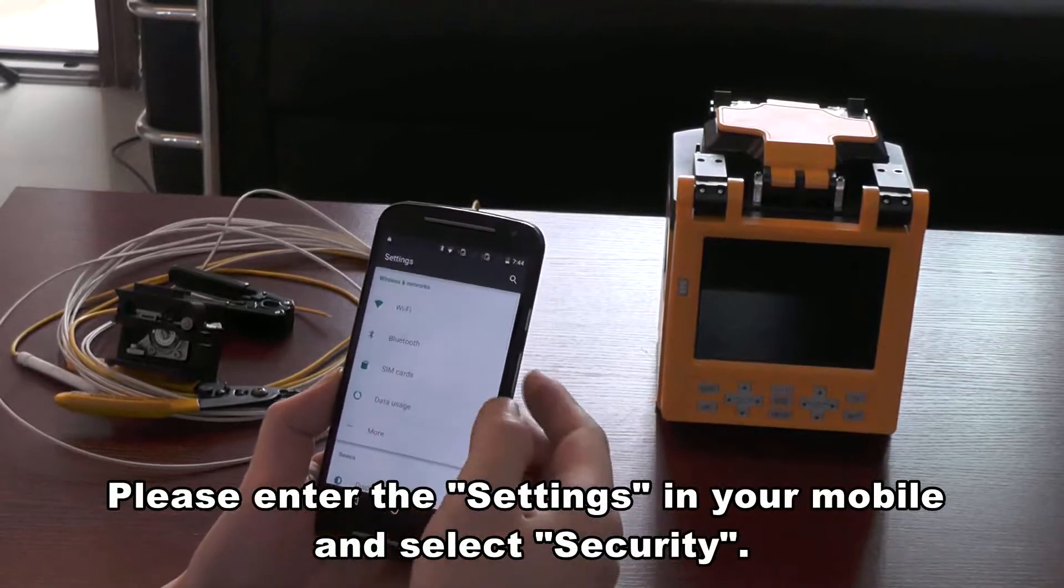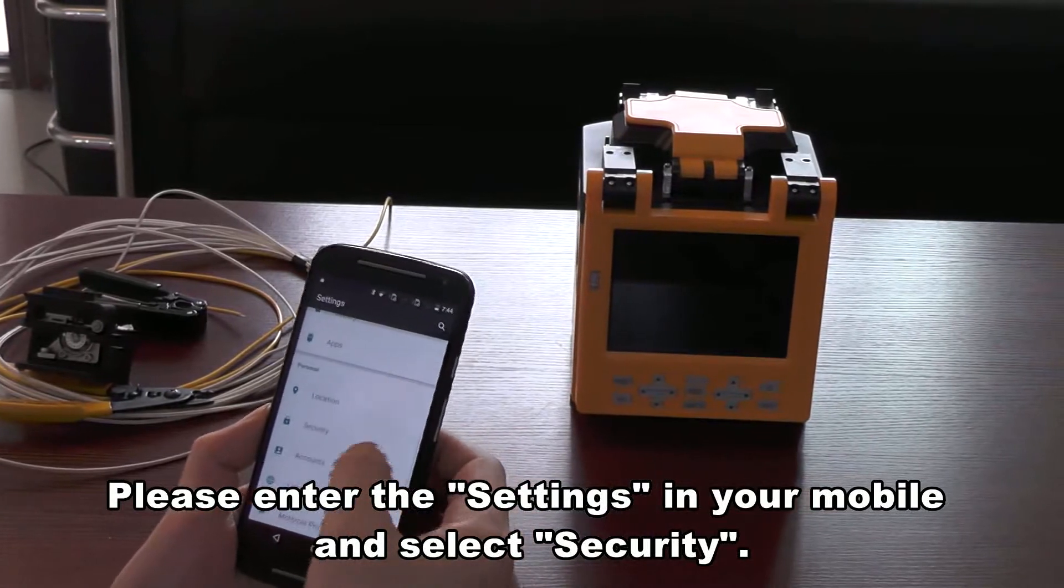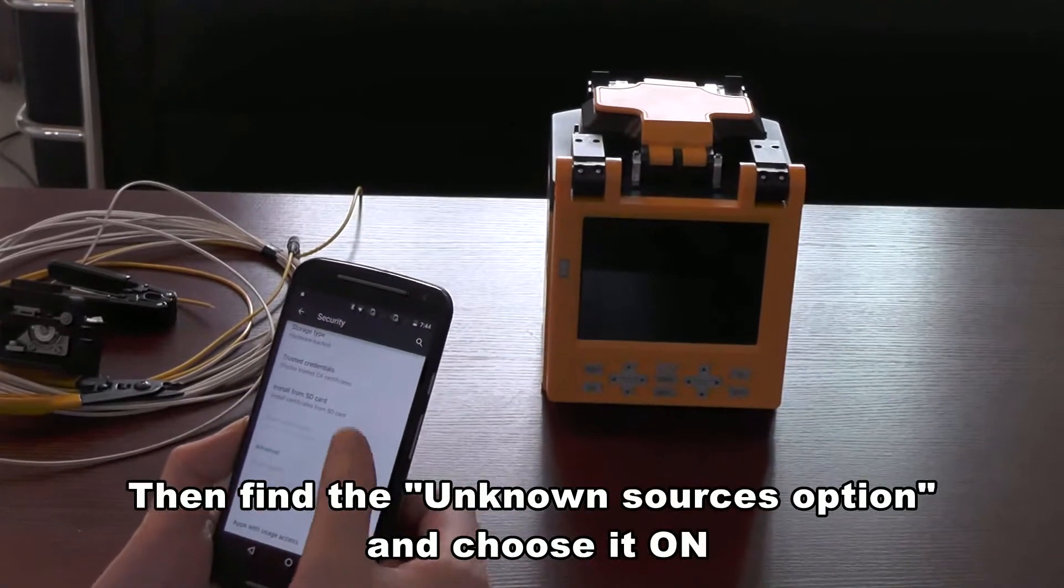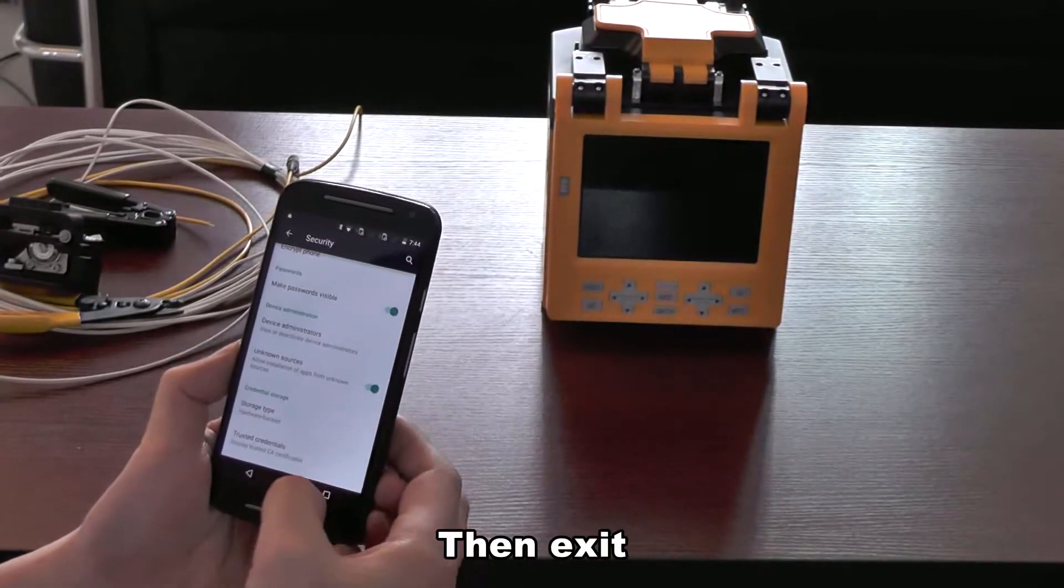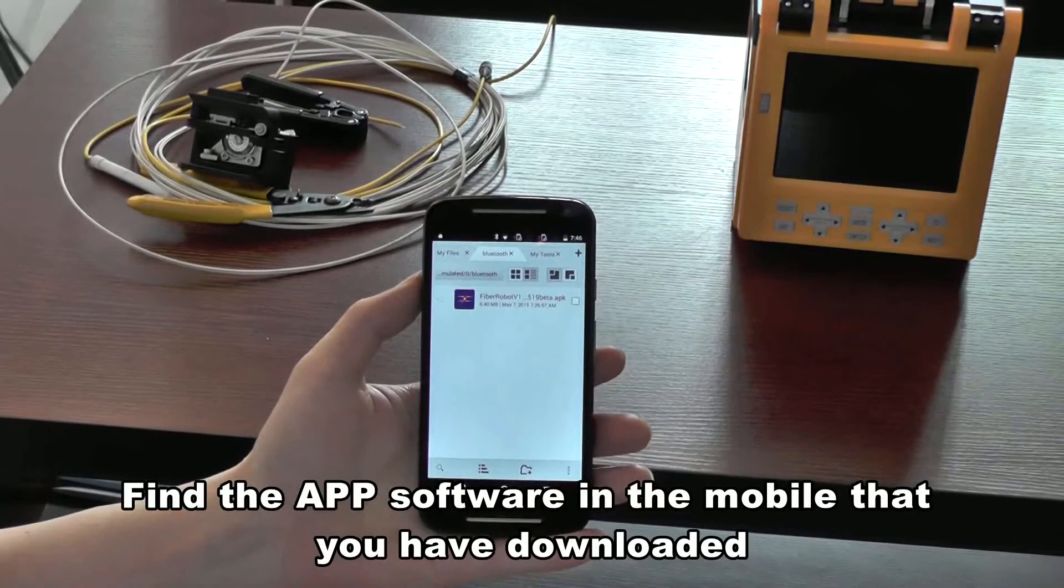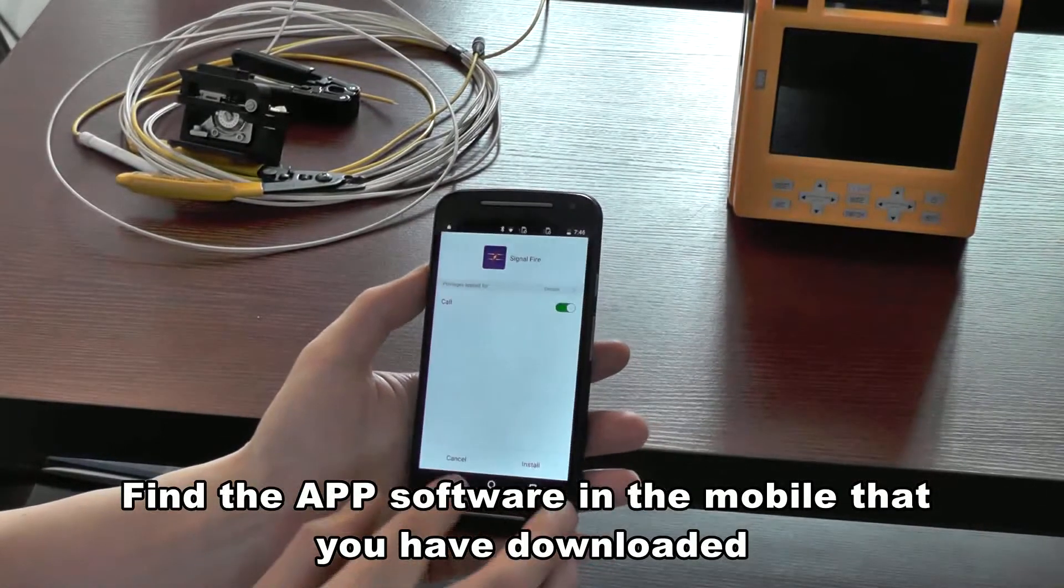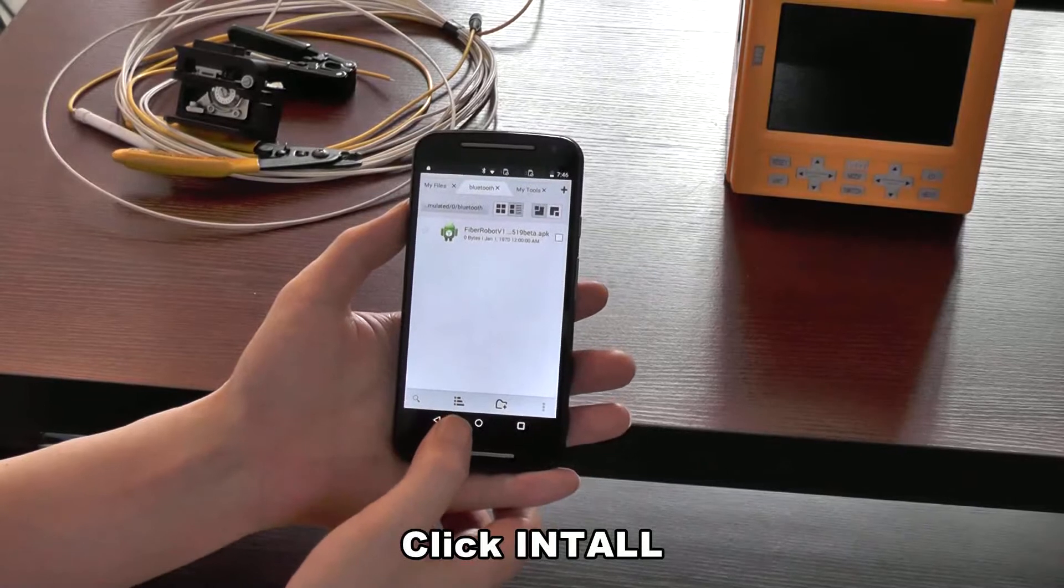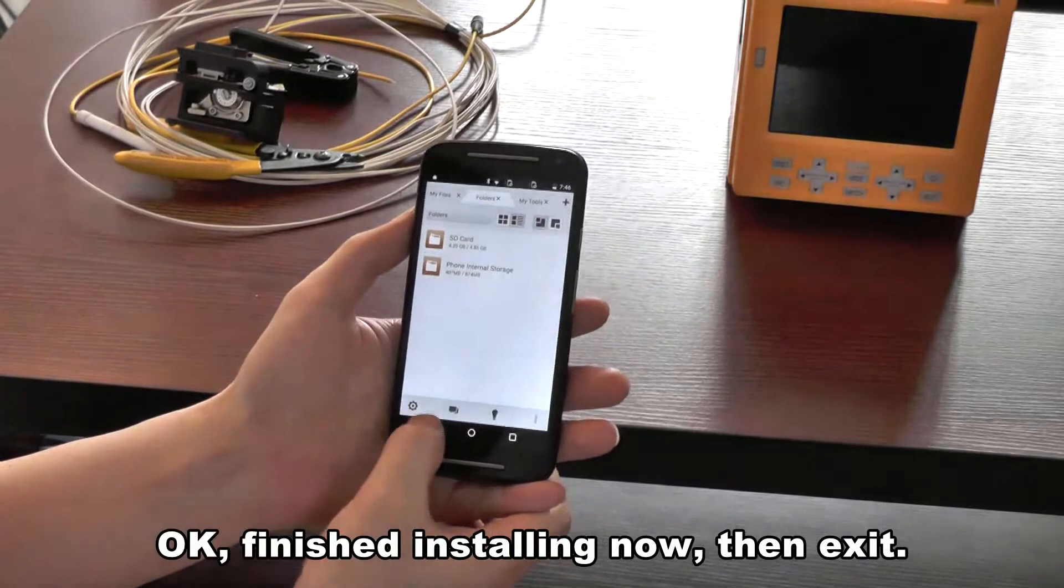Please enter the settings in your mobile and select security. Then find the unknown sources option and choose it on. Then exit. Find the app software in the mobile that you have downloaded. Click install. Okay, finished installing now, then exit.